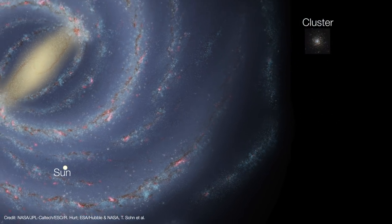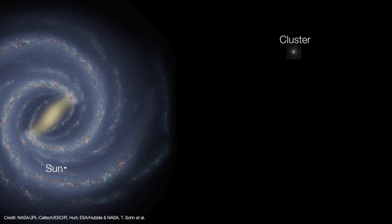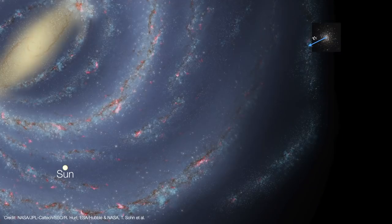But measuring a cluster's proper motion is very difficult. And that's because these clusters are so far away that their proper motions across the sky are very tiny on short timescales. For this reason, the true velocities of globular clusters had to be estimated based on measurements of the radial velocities, but estimates for everything else.